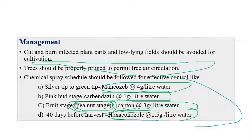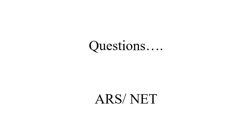Regarding questions related to ASRB NET: one important question that can be expected is that peach leaf curl is caused by Taphrina deformans. It is worth noting that this disease has no sexual stage. This is a very important point that appears in many exam areas. That concludes the discussion on peach diseases.